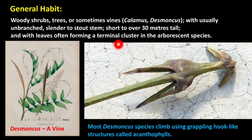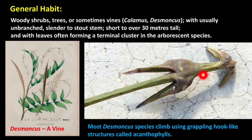These plants usually have unbranched, slender or stout stems, short or over 30 meters tall, with leaves often forming a terminal cluster in arborescent species. Arborescent means plants which have the appearance of a tree. The picture shows Desmoncus, which is a vine that climbs using grappling-hook-like structures called acanthophylls — a peculiar character of Desmoncus.